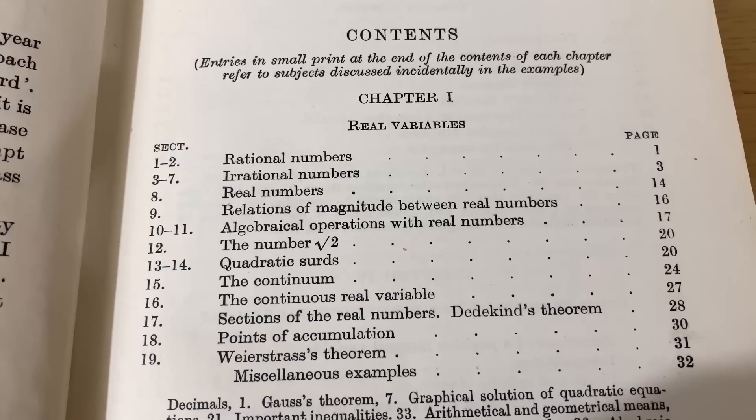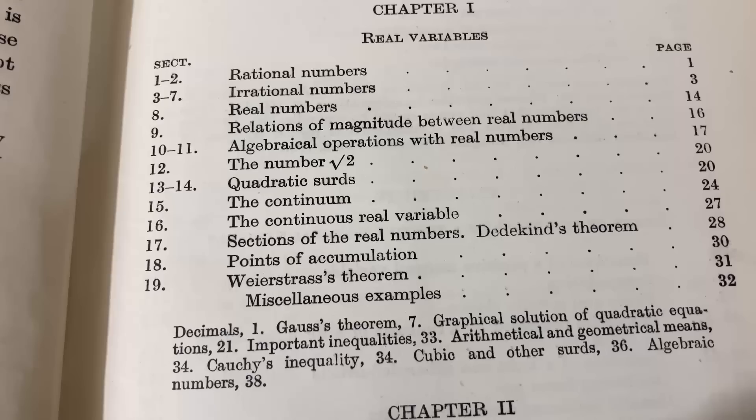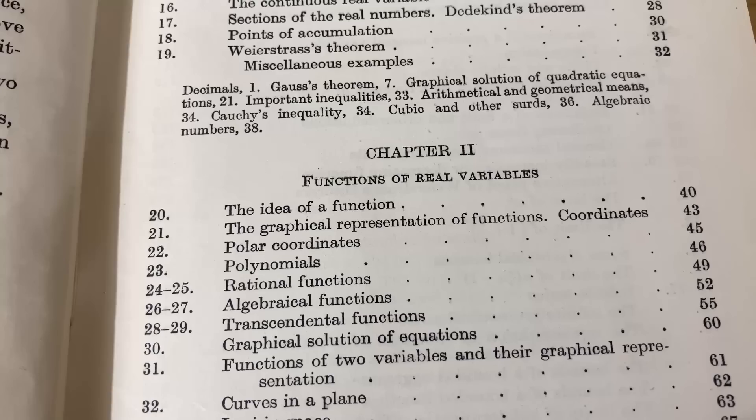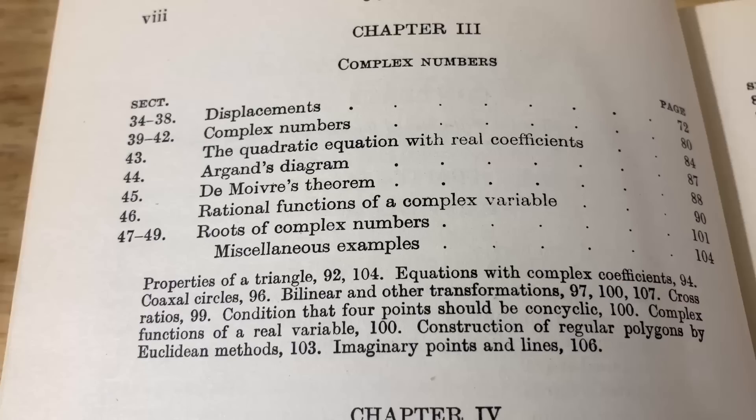Let's take a very close look at the contents of this book, and then we'll look at how the book reads and some actual examples. So he starts off with real variables. You can see he talks about rational numbers, irrational numbers, real numbers, the continuum. Chapter two is on functions of real variables. So he talks about the idea of a function, polynomials, curves in a plane. And I want to emphasize this book has a lot of mathematics as you're about to see.